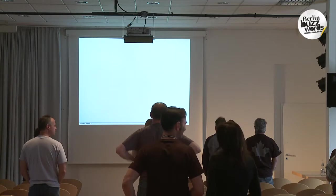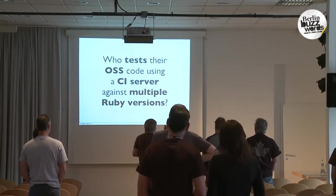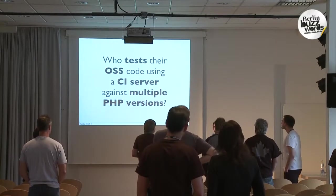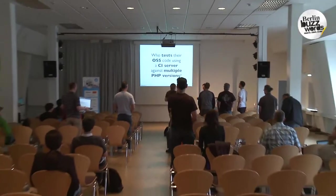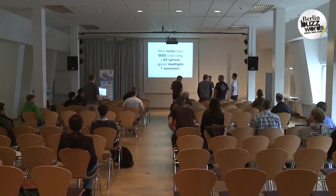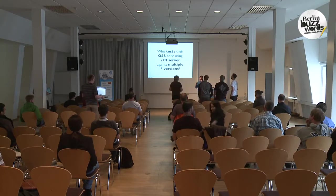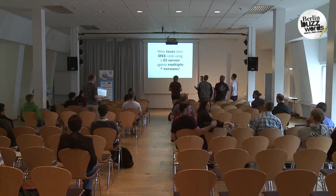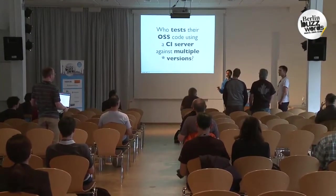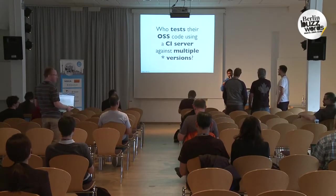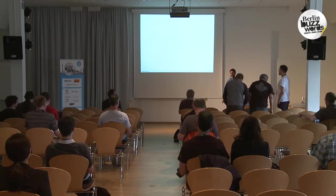Who uses a continuous integration server for their open source code that they're testing? And finally, who runs, whatever language you're using — be it Ruby, be it Java, be it PHP — who's actually testing against multiple versions of these languages? And who's giving all that infrastructure to their users that want to fork their open source code so that they can also test against multiple versions? Whoever is still standing now, they might not need Travis. Everybody else needs Travis.